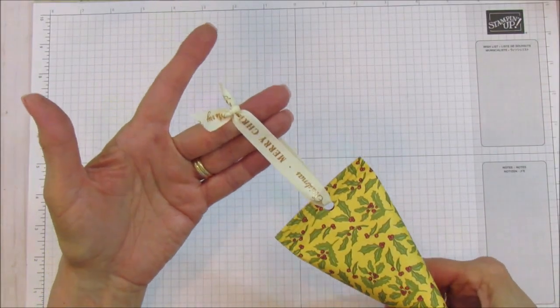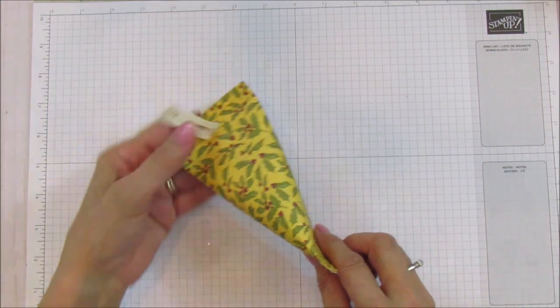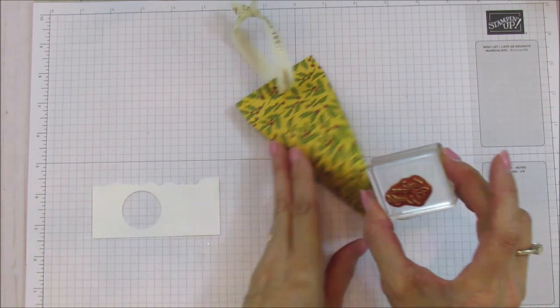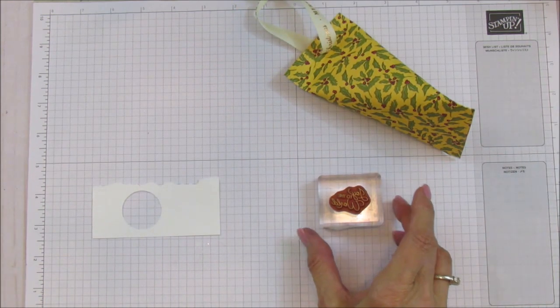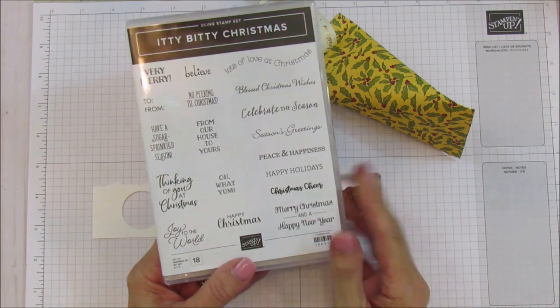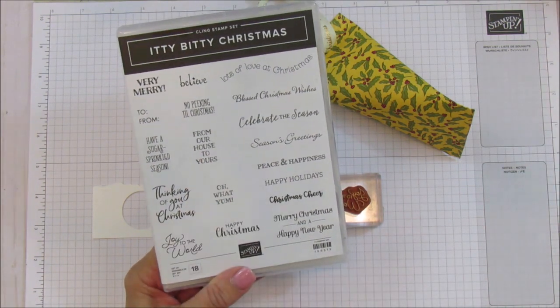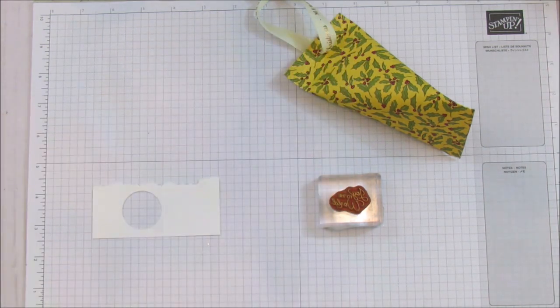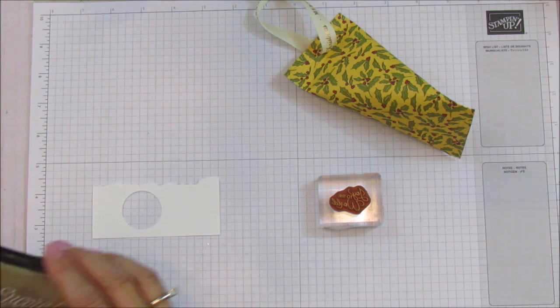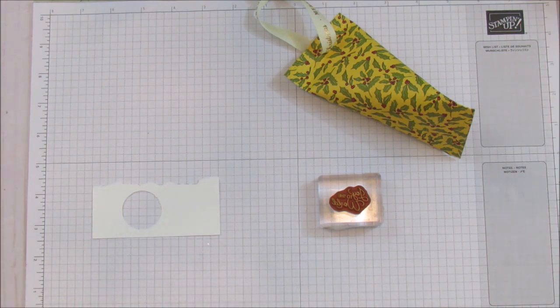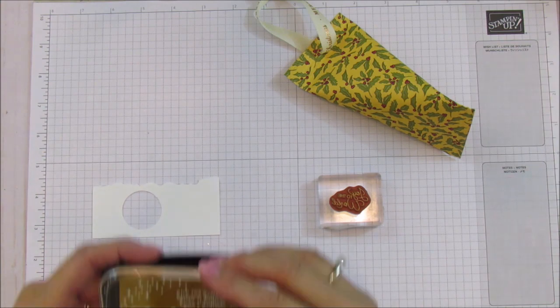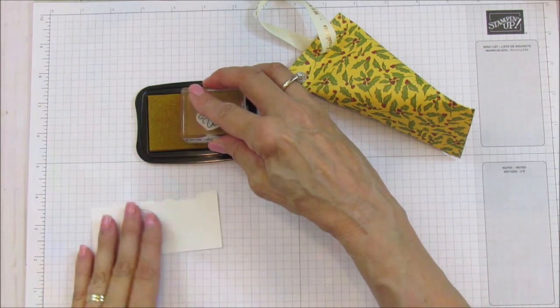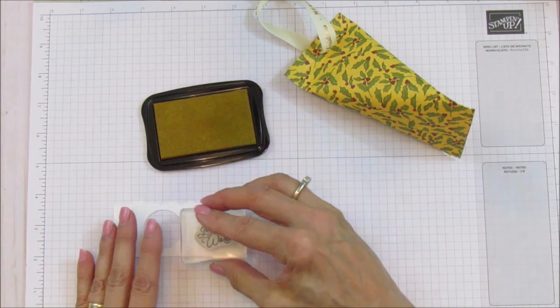And then we have our ribbon on there - isn't that ribbon really pretty? All right, so the next thing that we're going to do is stamp joy to the world. And the joy to the world is from this Itty Bitty Christmas. You can use any of these - it would be cute from our house to your house, the to and from, the believe, the very merry. But I like this joy to the world and I'm going to use our new Delicata gold ink. I grabbed the wrong one before. All right, and so we're going to use this and it's gorgeous.